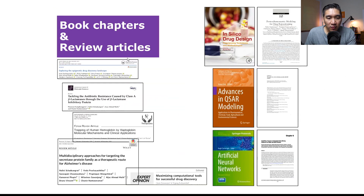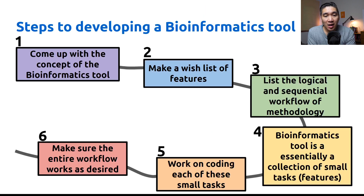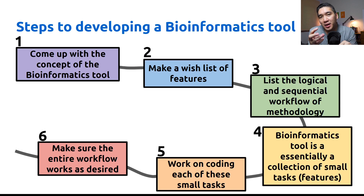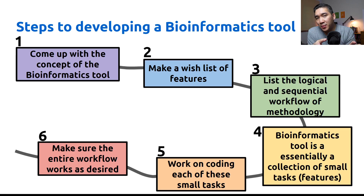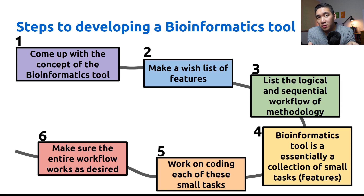Here are the steps to developing a bioinformatics tool — there are six steps. Step one: come up with the concept. Figure out what bioinformatics tool or software you want to develop. Normally the idea comes from an unsolved problem or inconvenience in your project. For example, it could be something that slows down your analysis — if you develop a tool to solve it, it saves not only your time but others' as well. Step two: make a wish list of features you want to see in the tool.